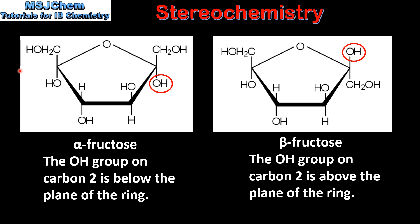Next we look at the two isomers of fructose. On the left we have alpha-fructose and on the right we have beta-fructose. In alpha-fructose the OH group on carbon number two is below the plane of the ring. In beta-fructose the OH group on carbon number two is above the plane of the ring.